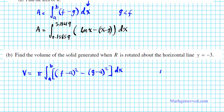Think about it — we have the two functions, and then we have the axis of rotation down here. We rotate, and our radius is basically perpendicular to the x-axis, or in the direction of the x-axis. So f is going to be the function on the top, a is going to be your axis of rotation, and g is going to be the function on the bottom.